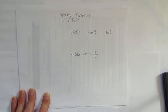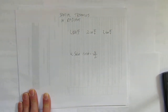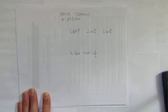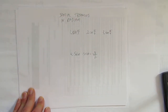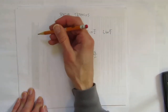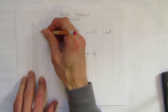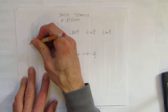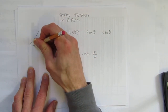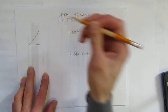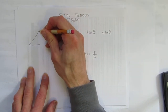In this video, we'll look at how to do special triangles when you're working with radians. The first thing is to draw the special triangles — there are two of them. This video is the same as the special triangles in degrees video, except we're going to work in radians.